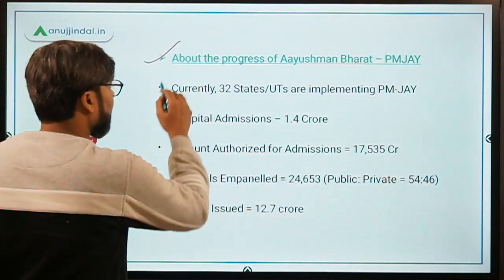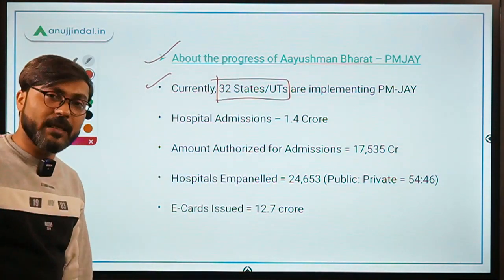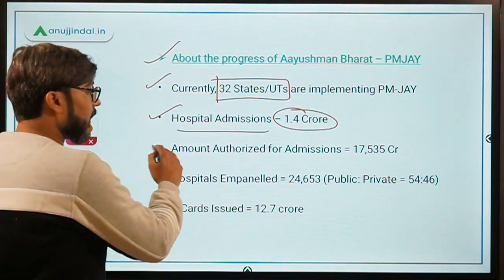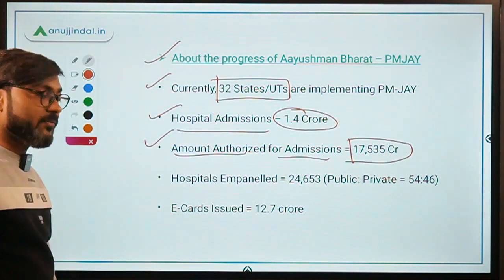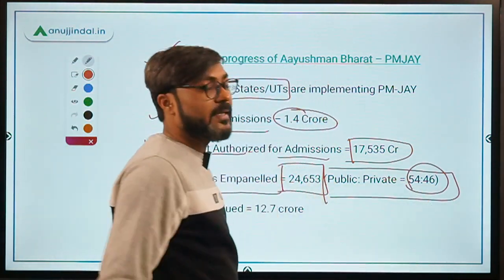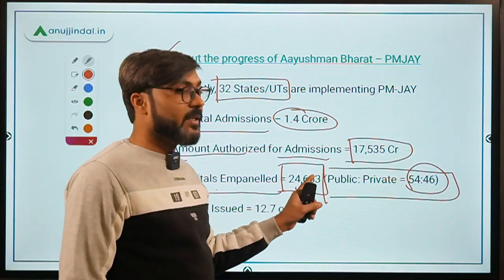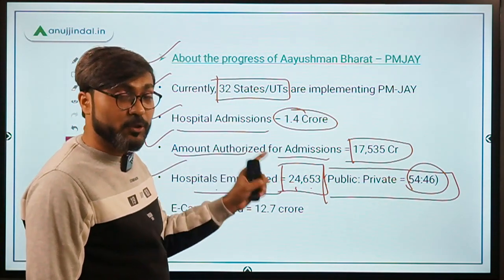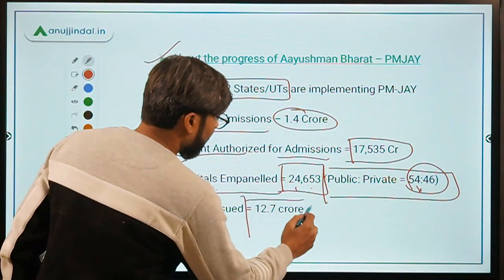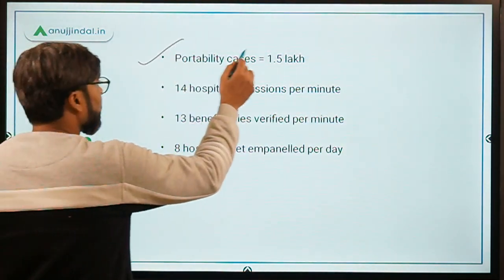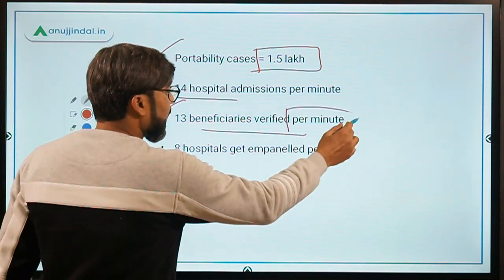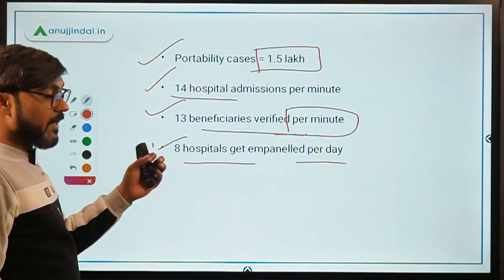Talking about the progress under Ayushman Bharat PMJAY: currently 32 states and UTs are implementing the scheme — it is not implemented in Delhi. Hospital admissions stand at 1.4 crore. The amount authorized for admissions is ₹7,535 crores. Total hospitals impaneled: 24,653, with a public-to-private ratio of 54:46. Total e-cards issued: 12.7 crores. Portability cases: 1.5 lakh. There are 14 hospital admissions per minute, 13 beneficiaries verified per minute, and 8 hospitals getting impaneled per day.